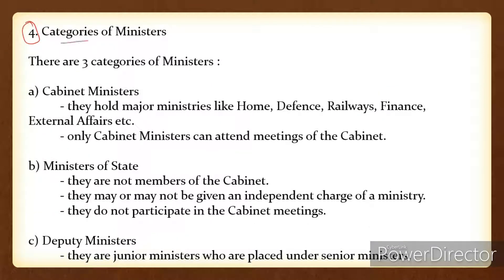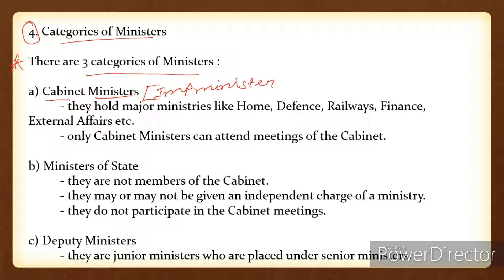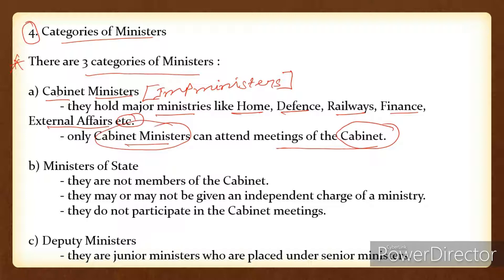Point number four is Categories of Ministers. There are three categories of ministers — this is an important part, so please focus here. Number one: Cabinet Ministers. Cabinet ministers are the most important ministers. They hold major ministries like Home Ministry, Defence Ministry, Railways, Finance, and External Affairs Ministry. Only cabinet ministers can attend meetings of the cabinet.